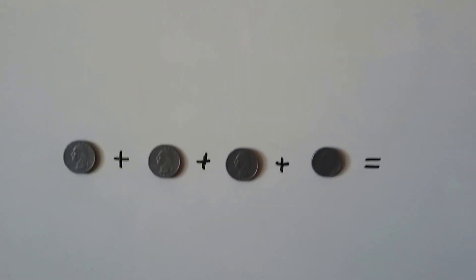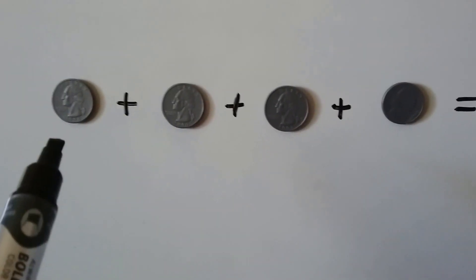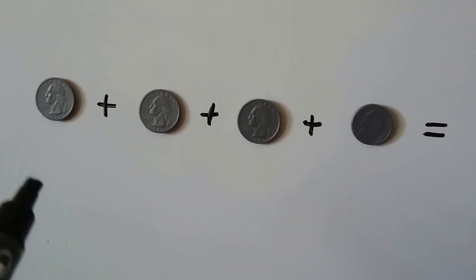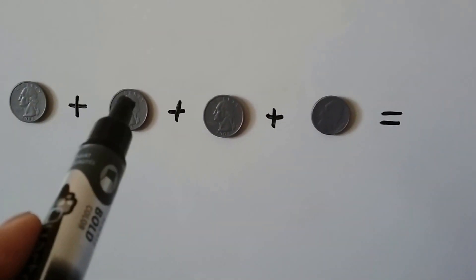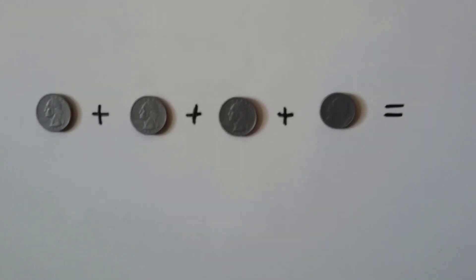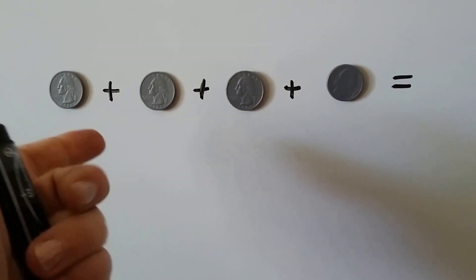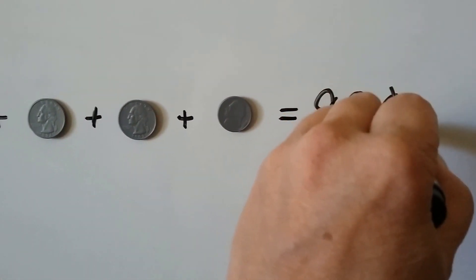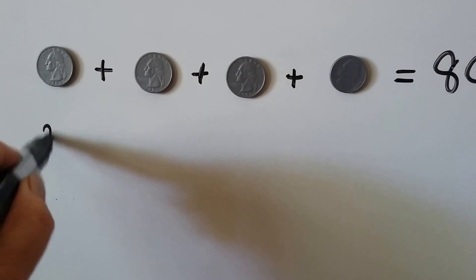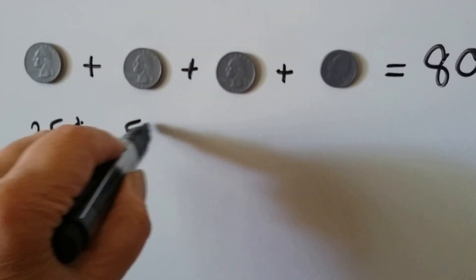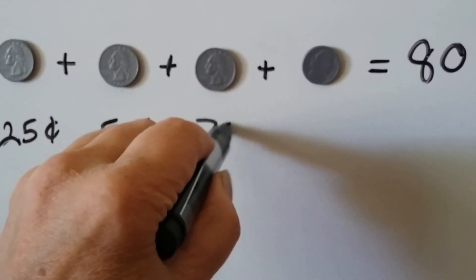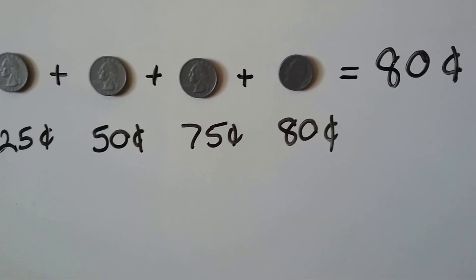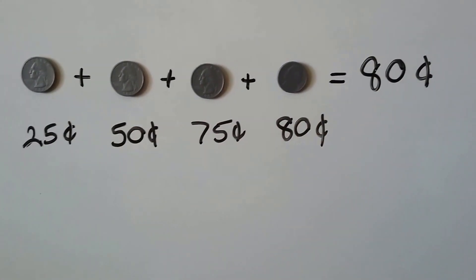Let's try it again. We have three quarters and a nickel. Count by 25s: 25, 50, 75; and five more: 76, 77, 78, 79, 80. Three quarters and a nickel is 80 cents.